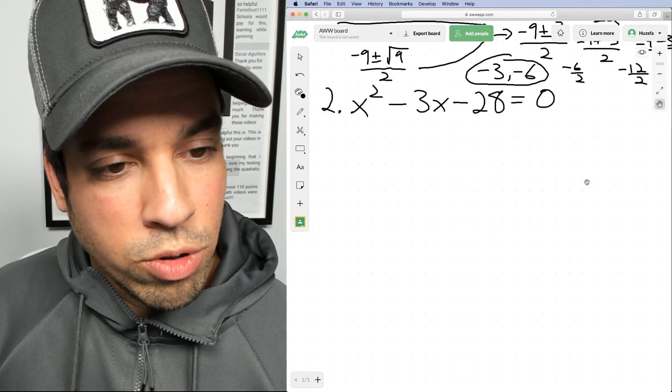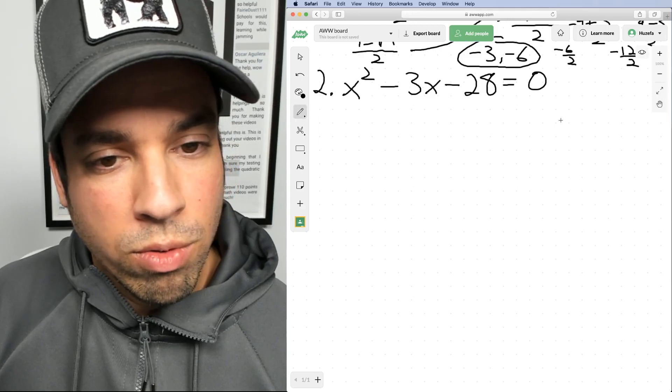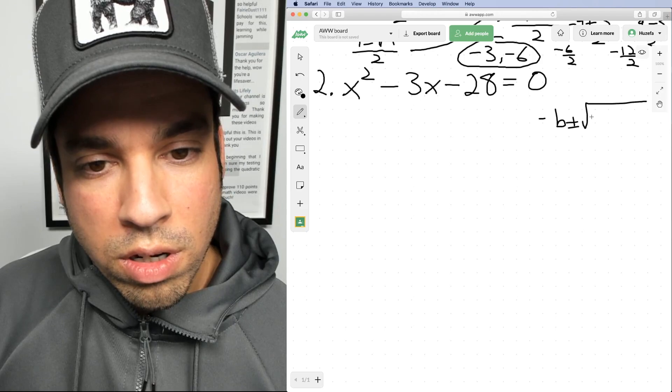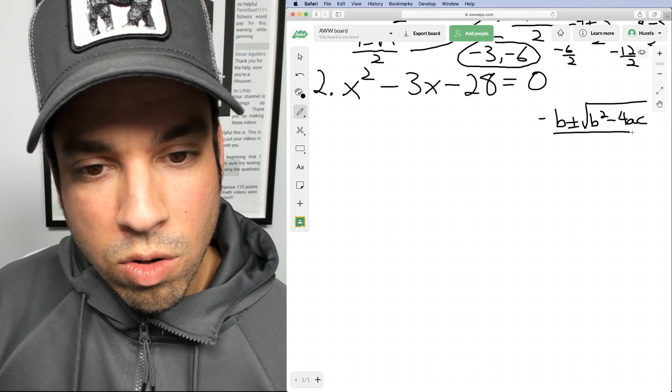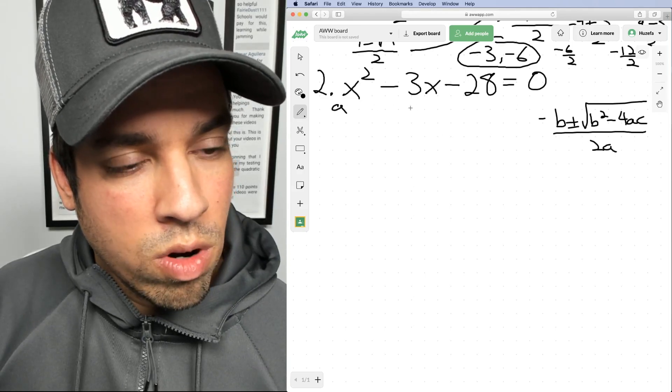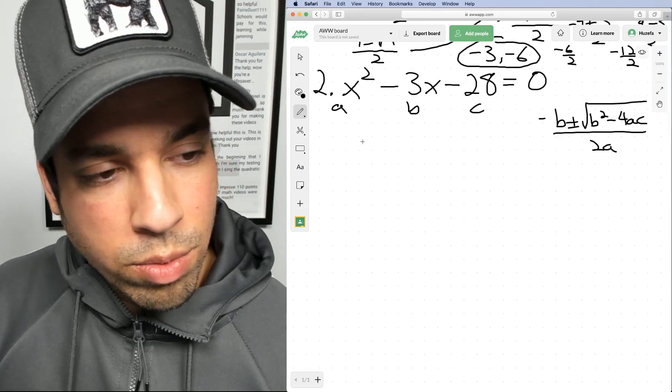Now let's look at number two. And again, I'm gonna rewrite that quadratic formula for us. So we got negative B plus or minus square root of B squared minus four AC over two A. And we've got A is that one, B is that negative three, and C is negative 28. Here we go.